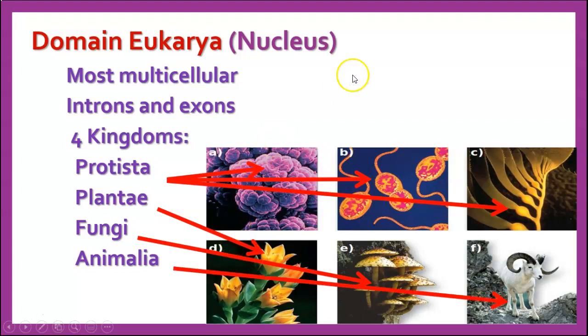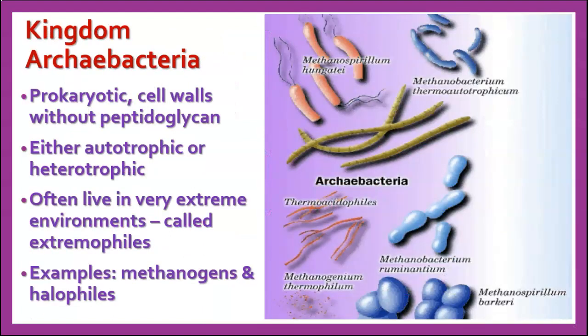Those are our four basic kingdom groups we'll talk about in Domain Eukarya. We're going to take notes about each kingdom in turn, because you'll be expected to take a description and figure out which kingdom and which domain it belongs to. Kingdom Archaebacteria: they're prokaryotic, cell walls do not have peptidoglycan, some are autotrophs and some are heterotrophs depending on species, they often live in very extreme environments and are called extremophiles. Examples include methanogens and halophiles.